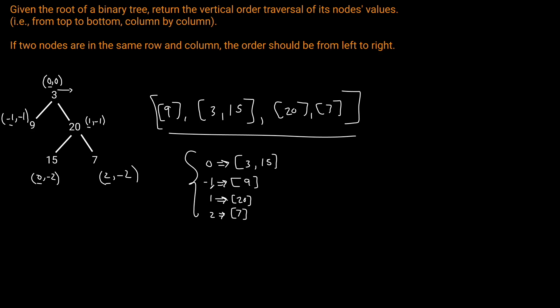We need to track the leftmost and rightmost column values. If we know -1 is the leftmost column and 2 is the rightmost, we can iterate through the range from -1 to 2 and extract values in order: at -1 we get 9, at 0 we get 3 and 15, at 1 we get 20, and at 2 we get 7. We'll populate this dictionary as we go. That's the general approach.